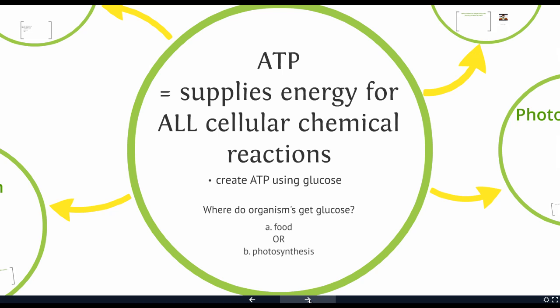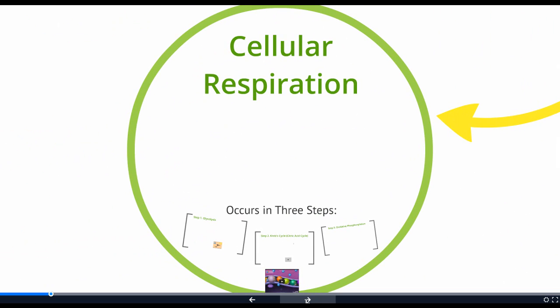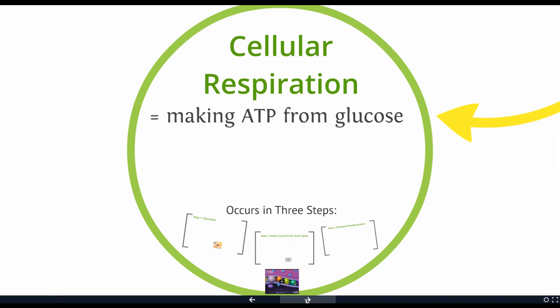If we think about where organisms get their glucose, it's either from food or from photosynthesis. If you are a consumer, you have to get it from your food. If you're a producer, you can get it from photosynthesis or another process called chemosynthesis. Cellular respiration is the process in which we break down glucose and actually build ATP — making ATP from glucose.